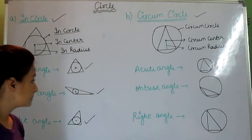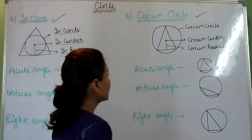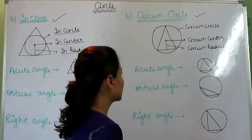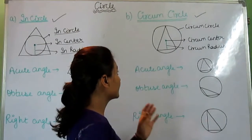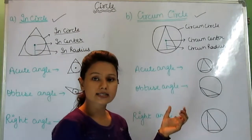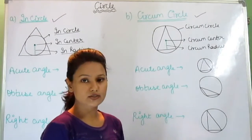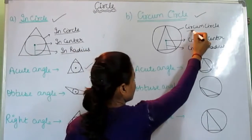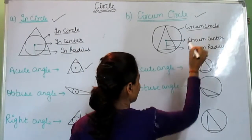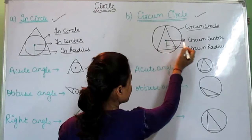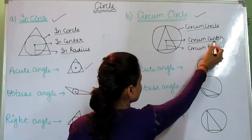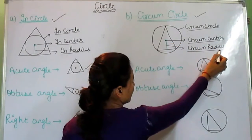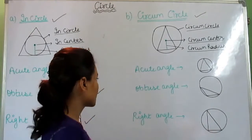Now let's come to the circumcircle. In the circumcircle, the circle lies outside the triangle. This point at the center is the circumcenter, and this radius is known as the circumradius.